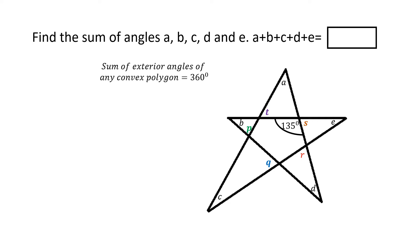Going by this theorem, the sum of P, Q, R, S, and T should be equal to 360 degrees. So we can write this equation that P plus Q plus R plus S plus T is 360 degrees.